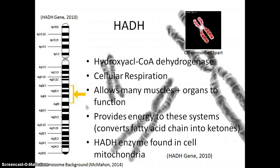Another gene is HADH, or hydroxyacyl-CoA dehydrogenase. This can be found in cellular respiration in the mitochondria, which allows many muscles and organs to function properly by providing energy through converting fatty acid chains into ketones. This gene is found towards the center of the long end of chromosome 4.